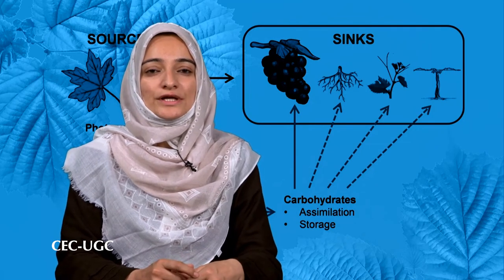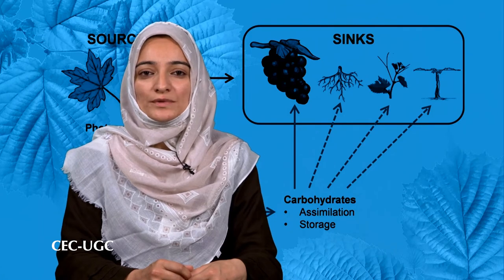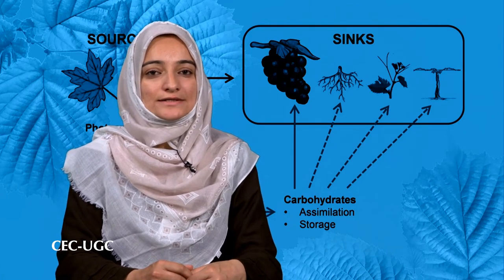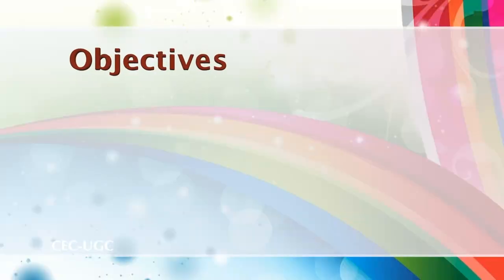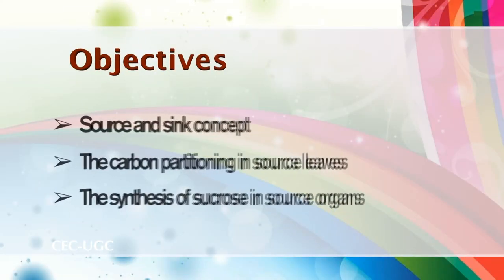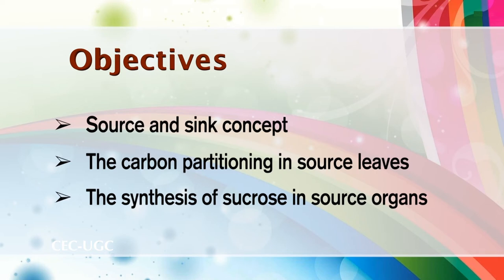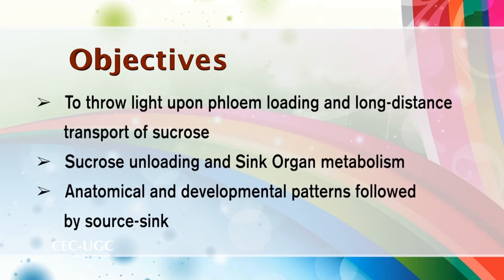Hello dear students, today we are going to discuss one of the important concepts in plant physiology: the source-sink relationship. The objectives of the present study are to elucidate the source and sink concept, explain carbon partitioning in source leaves, explicate the synthesis of sucrose in source organs, discuss phloem loading and long-distance transport of sucrose, sucrose unloading and sink organ metabolism, and explain the anatomical and developmental patterns followed by source-sink pathways.